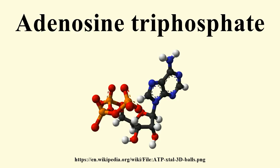The pyruvate generated as an end product of glycolysis is a substrate for the Krebs cycle. In the mitochondrion, pyruvate is oxidized by the pyruvate dehydrogenase complex to an acetyl group, which is fully oxidized to carbon dioxide by the citric acid cycle. Every turn of the citric acid cycle produces two molecules of carbon dioxide, one molecule of the ATP-equivalent GTP through substrate-level phosphorylation catalyzed by succinyl-CoA synthetase, three molecules of the reduced coenzyme NADH, and one molecule of the reduced coenzyme FADH₂.